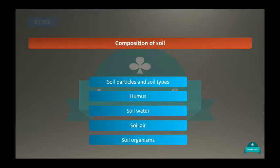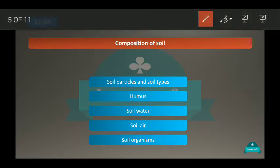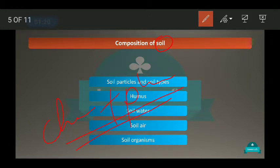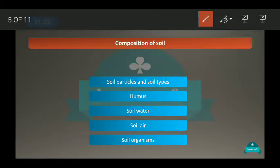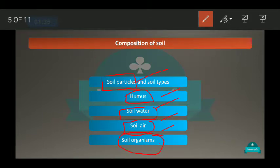Today we are going to learn the composition of soil — what soil is made up of. Soil is formed by chemical and physical processes from parent rock. The different components of soil are: soil particles, humus, soil water, soil air, and soil organisms.